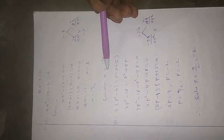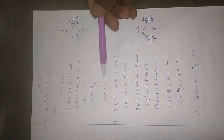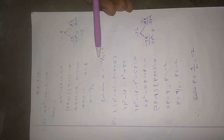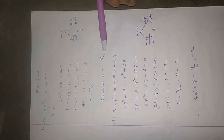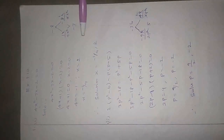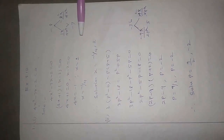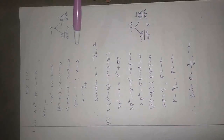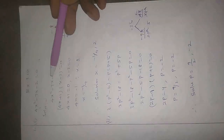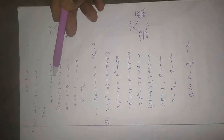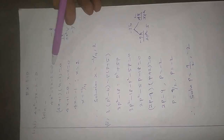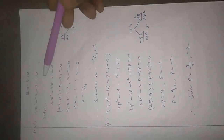Therefore, the solution of x equals minus 1 by 4 comma 2. This is a very easy step. Once more, let me explain. Given question: 4x squared minus 7x minus 2 is equal to 0.